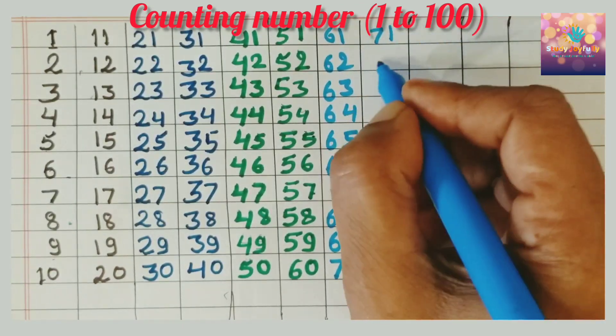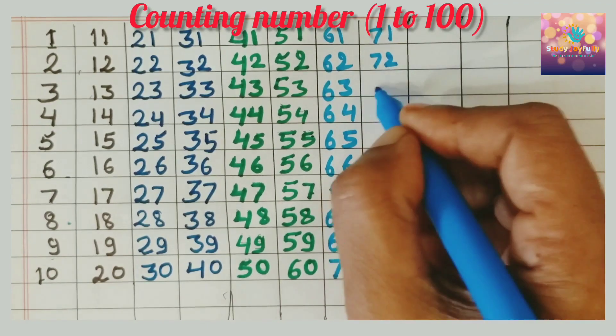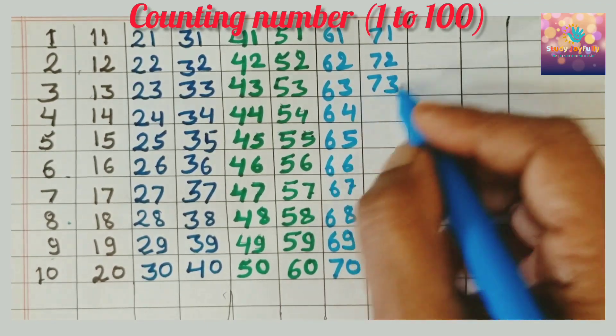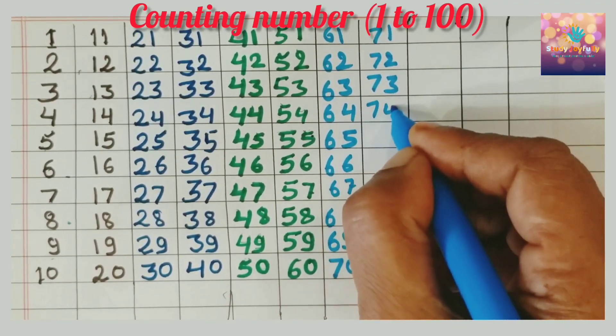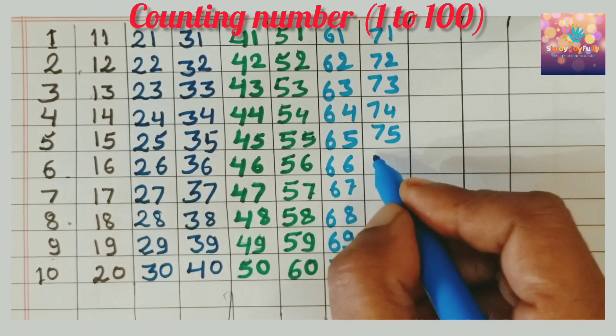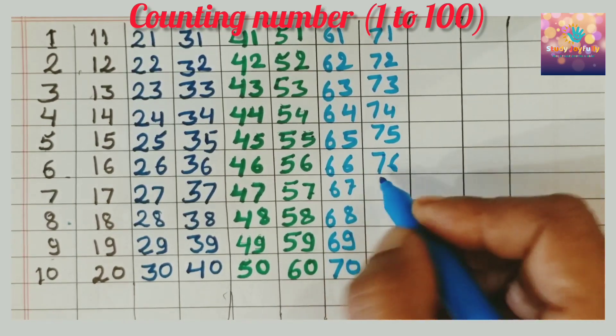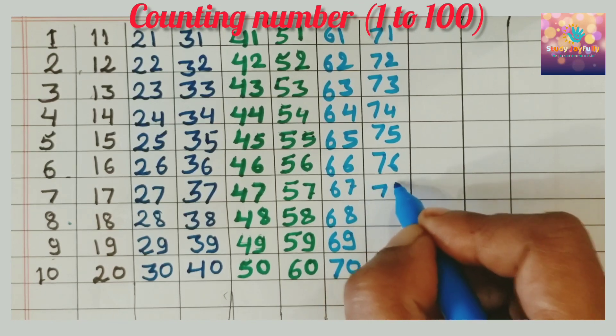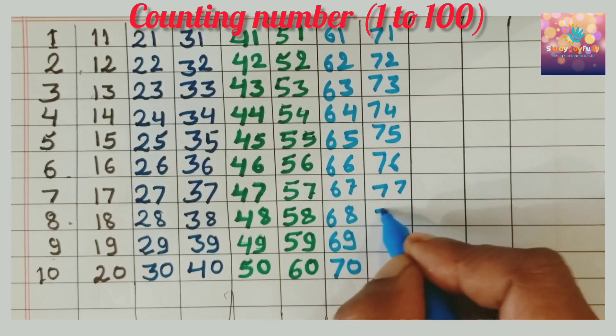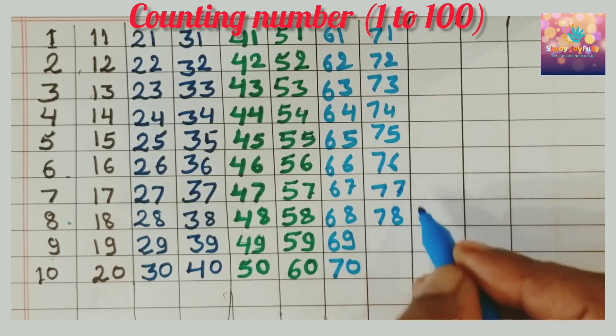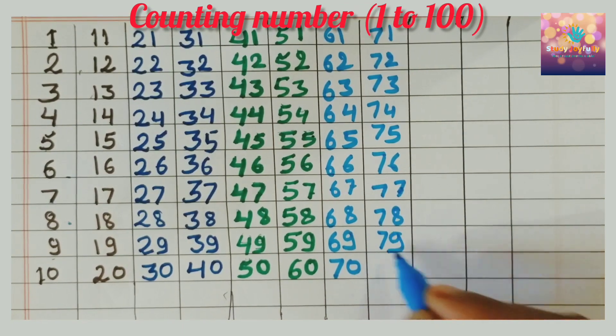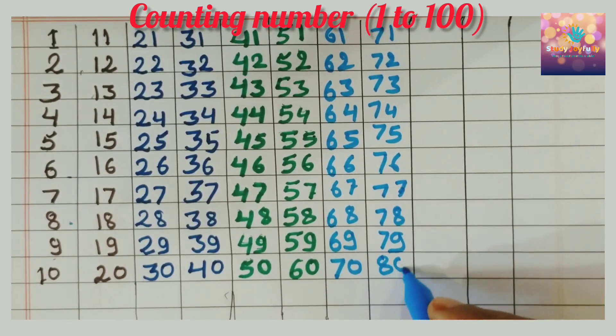7, 1, 71. 7, 2, 72. 7, 3, 73. 7, 4, 74. 7, 5, 75. 7, 6, 76. 7, 7, 77. 7, 8, 78. 7, 9, 79. 8, 0, 80.